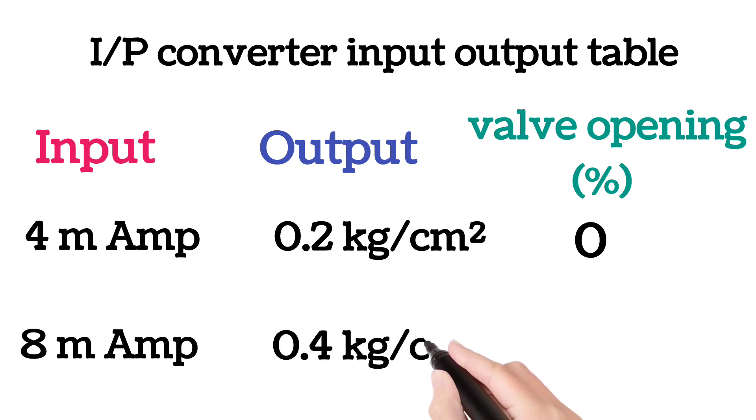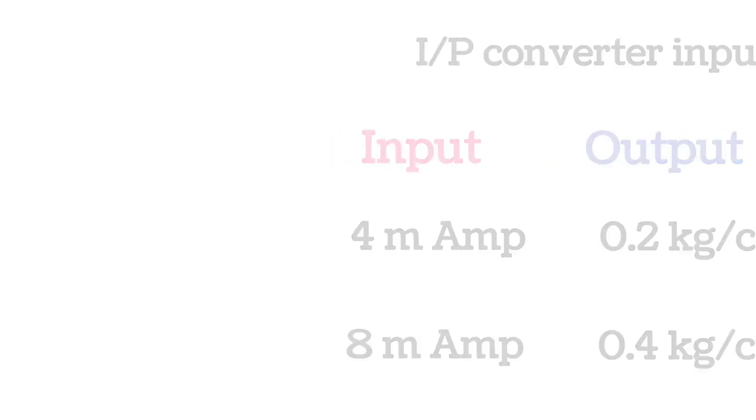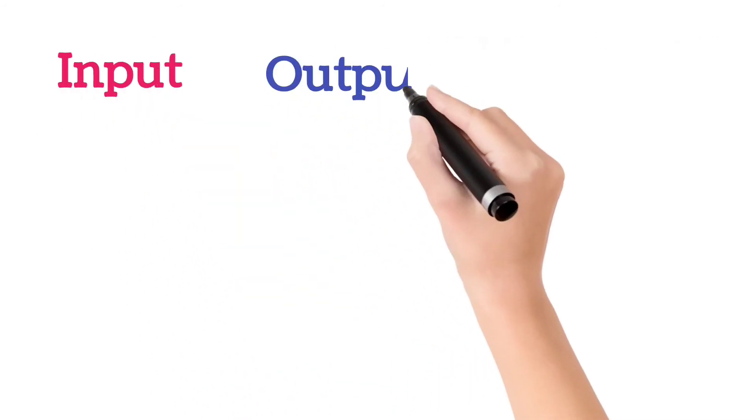At 8 milliamps, the output of I to P converter is 0.4 and valve opening is 25%. Similarly,